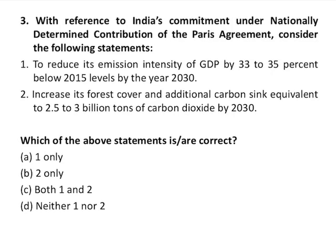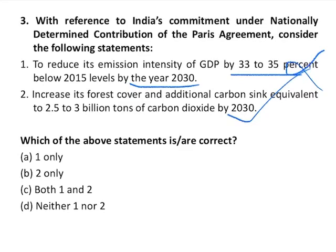Question number three is on India's commitment under the Nationally Determined Contribution to the Paris Agreement. The first statement says India committed to reduce its emission intensity of GDP by 33 to 35 percent below 2015 level by 2030 — this is wrong. In its NDC, India promised to reduce emission intensity of GDP by 33 to 35 percent below the 2005 level by 2030, not 2015. The second statement says India committed to increase forest cover and additional carbon sink equivalent to 2.5 to 3 billion tons of CO2 by 2030 — this is correct. So only statement two is correct, option B.